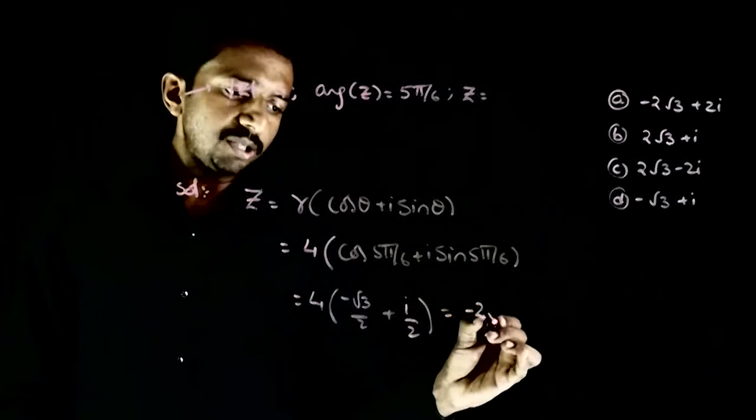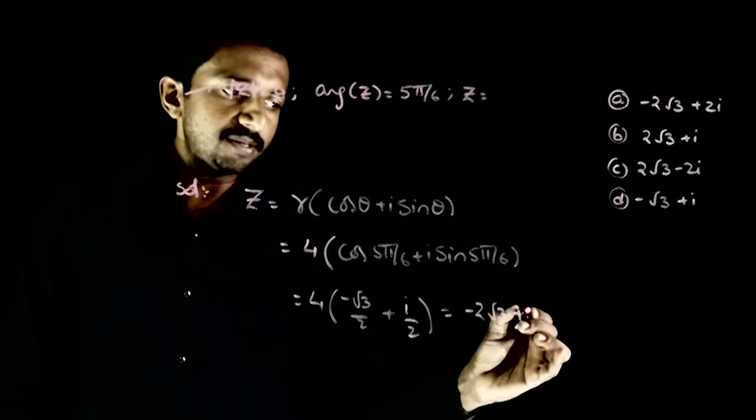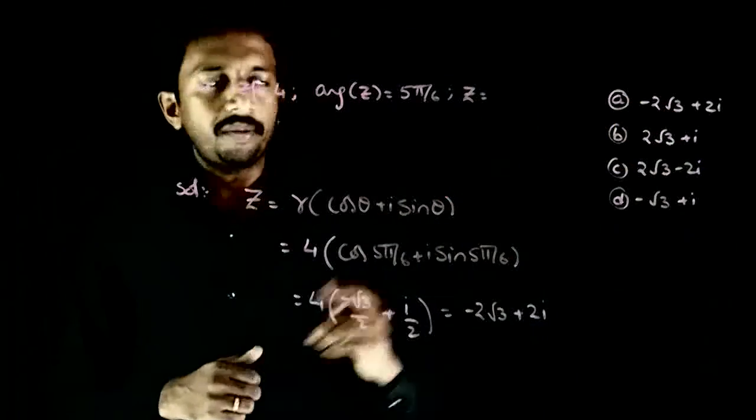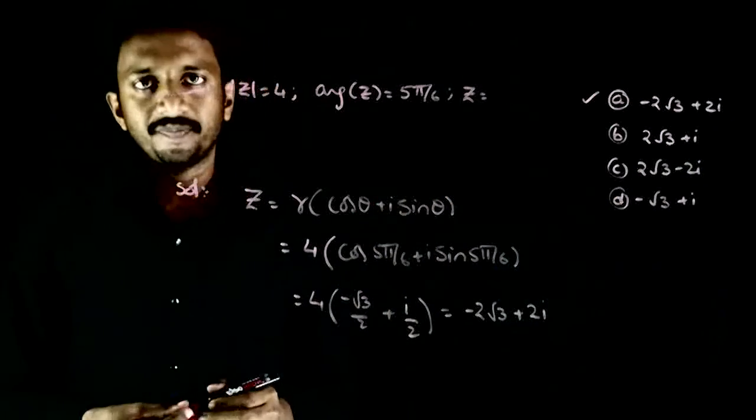So you get minus 2 root 3 plus 2i. So minus 2 root 3 plus 2i, option a is the right answer. Thank you.